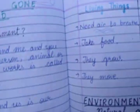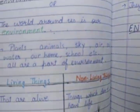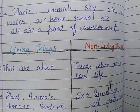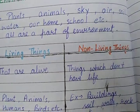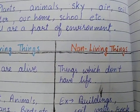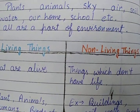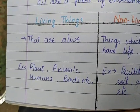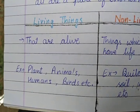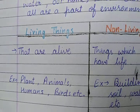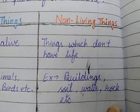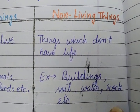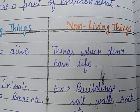What are the properties of living things? Living things are alive, and non-living things do not have life. Living things are plants, animals, humans, birds, etc. Non-living things are buildings, soil, water, rock, etc. Non-living things do not have life — they don't grow.